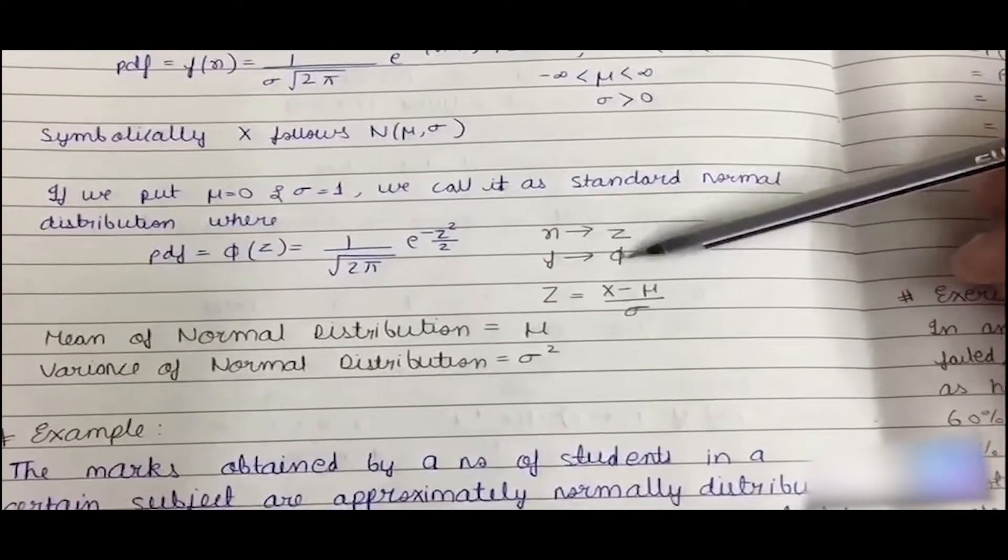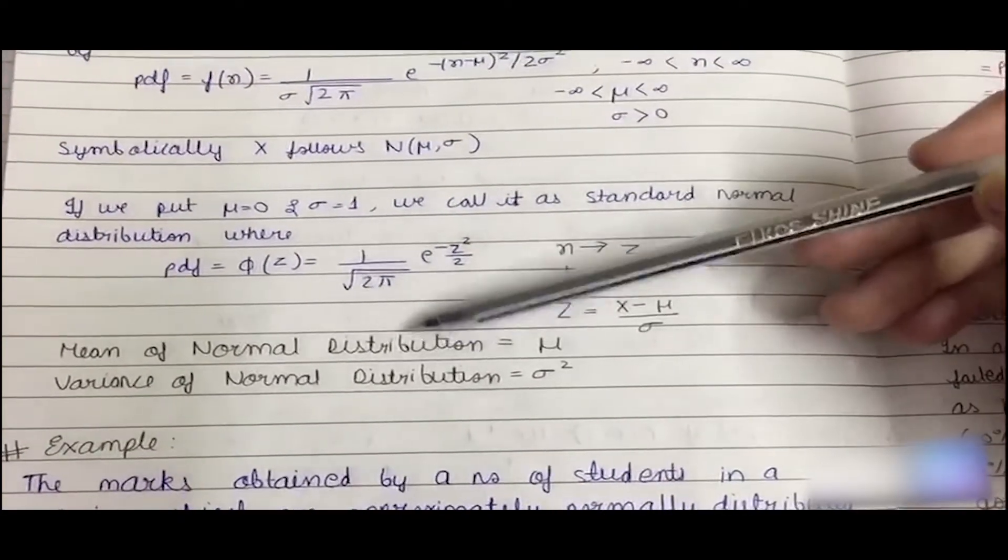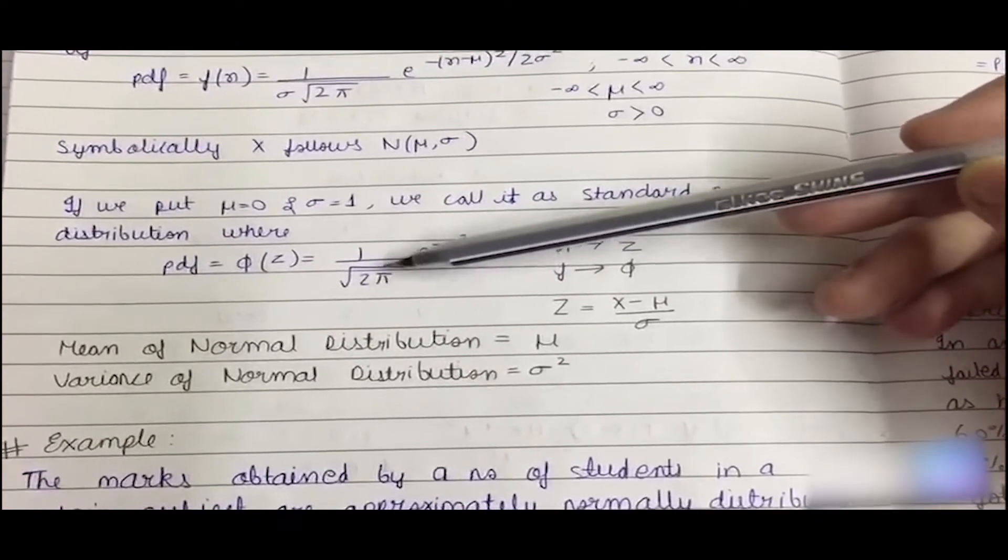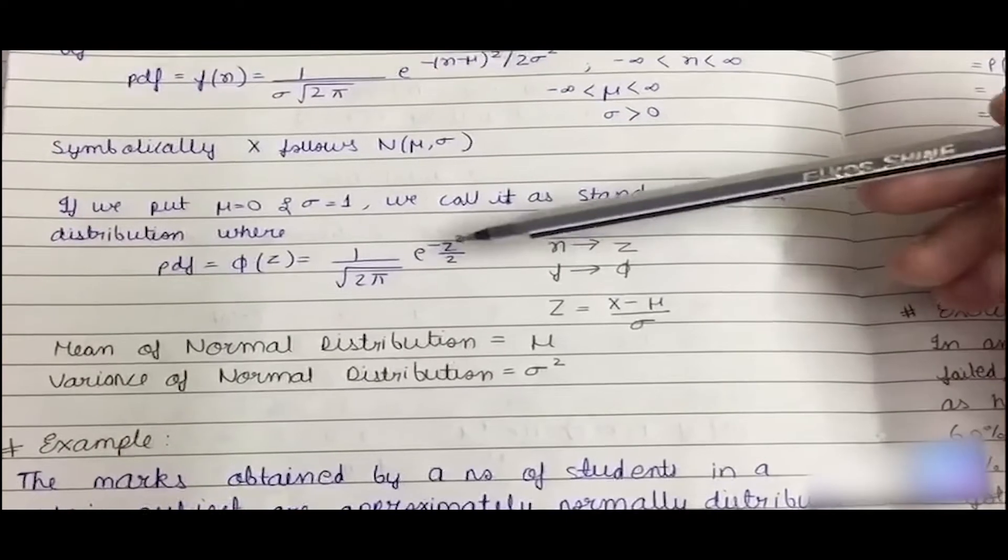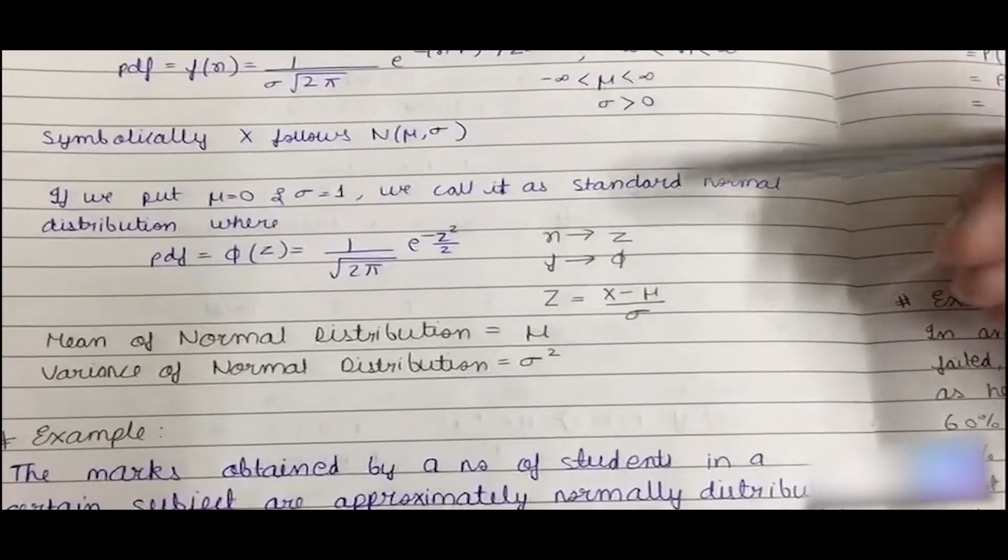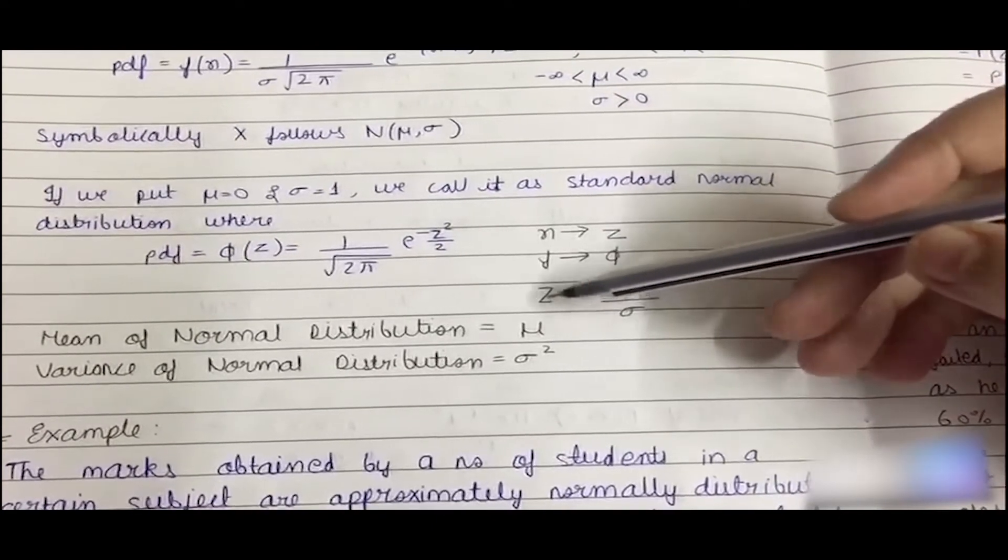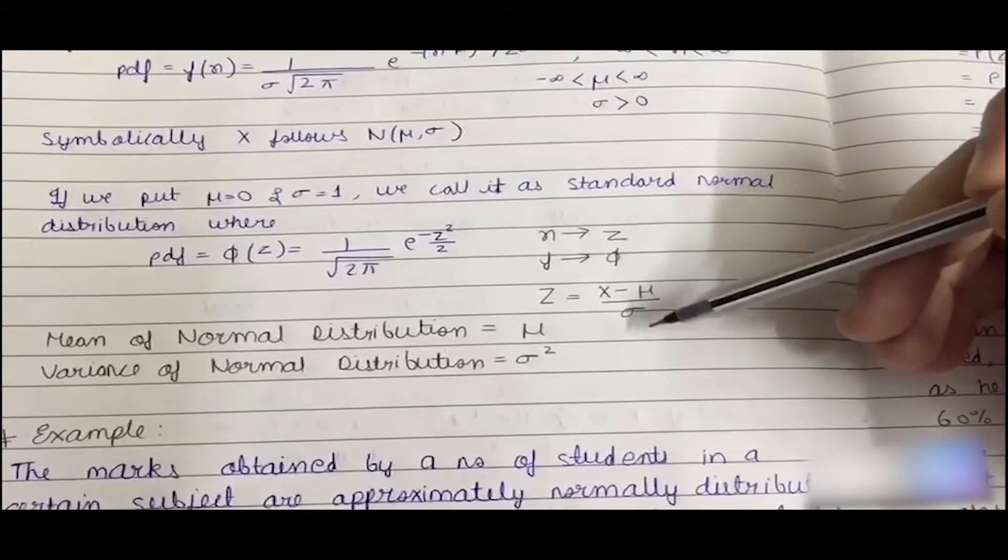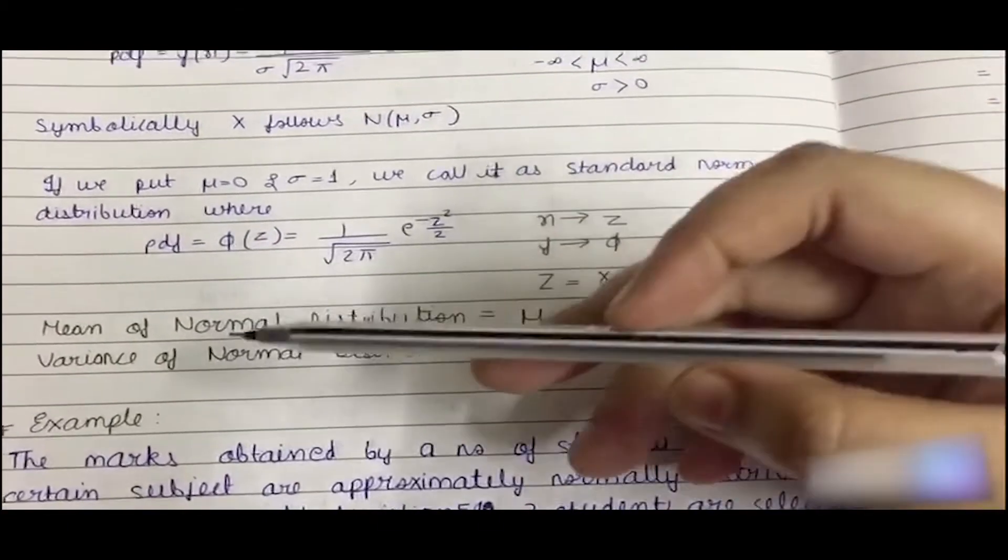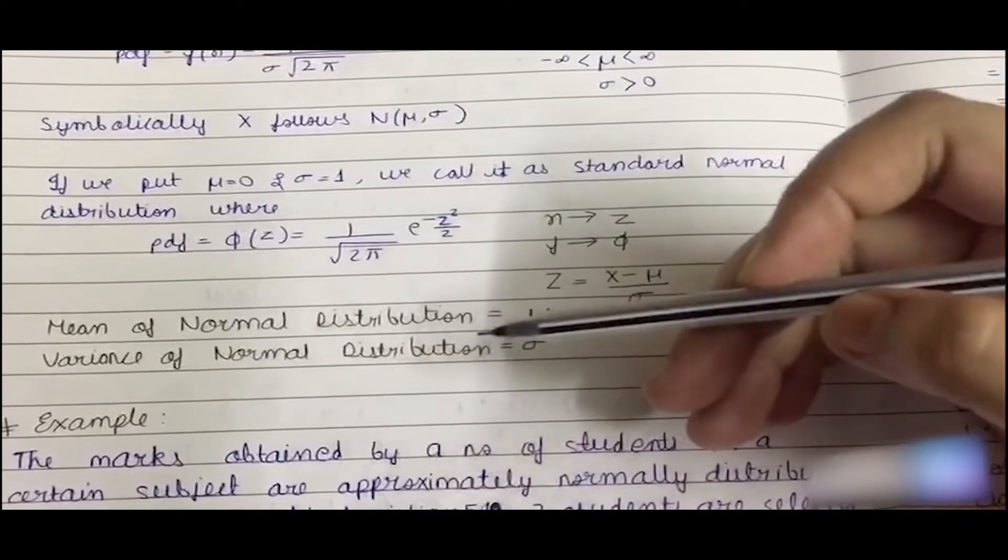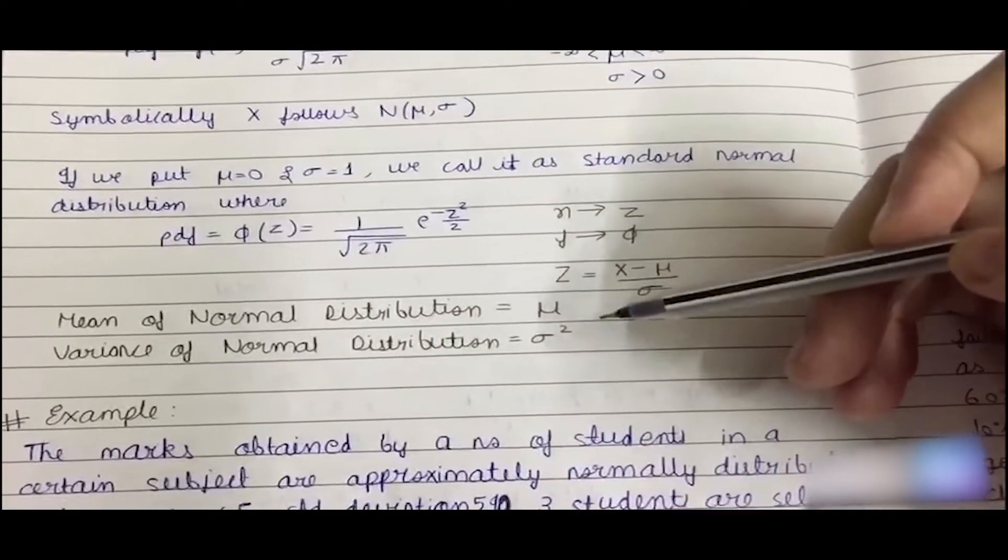Hence f(x) would be replaced by z, f would be replaced by phi, and the formula would turn out to be phi(z) equals 1 by root over of 2 pi into e to the power minus z square by 2. In these cases we write z as (x minus mu) divided by sigma. Mean of the normal distribution is mu and variance of the normal distribution is sigma square.